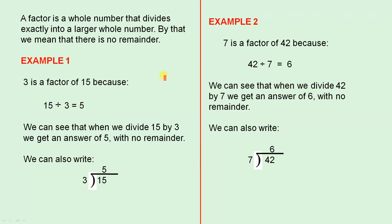Example 1. 3 is a factor of 15 because 15 divided by 3 equals 5. We can see that when we divide 15 by 3, we get an answer of 5 with no remainder. We can also write 3 divided into 15 gives us 5.